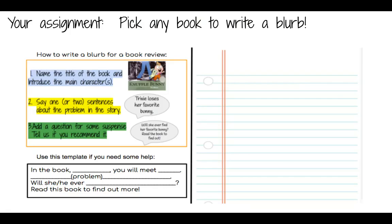Now here's your assignment for today. You're going to pick any book to write a blurb. You're going to do the same thing that we did today together: name the title of the book and introduce the main characters, say one or maybe two sentences about the problem in the story, and finally add a question to build some suspense and tell us if you recommend it. I created a little template on the bottom that you can use to help you as you write. I can't wait to see your work.